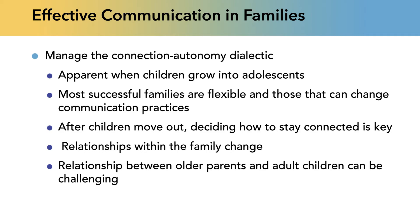In order for a family to have effective communication, there are two dialectics that come into play. One of them is the connection-autonomy dialectic: how much does the family function as a unit, and how much leeway do people have to be an individual? This obviously comes up when children grow into adolescence — that back and forth between 'I just don't want to be with my family, they're so annoying' and then 'I need to be with my family.'